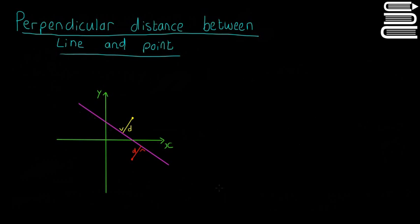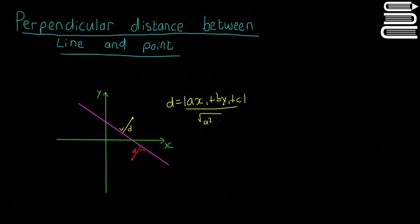So for example, we have our purple line drawn here. We have a yellow dot and a red dot, so we've got two distances — they're going to be different. We're going to use the same formula to calculate them. The formula is D equals ax₁ plus by₁ plus c, all divided by the square root of a squared plus b squared.